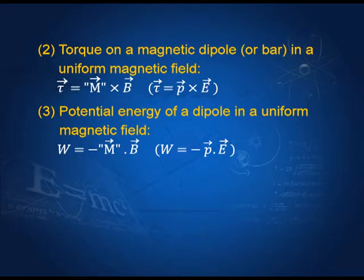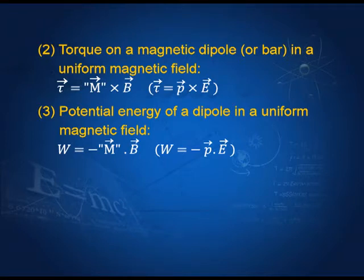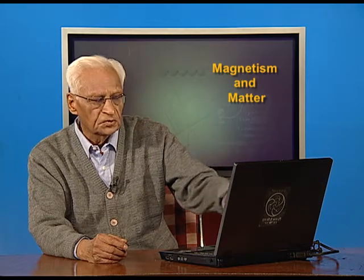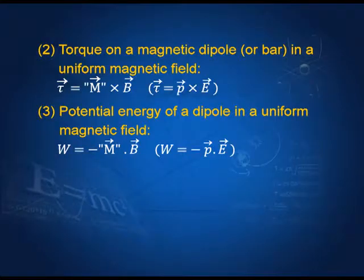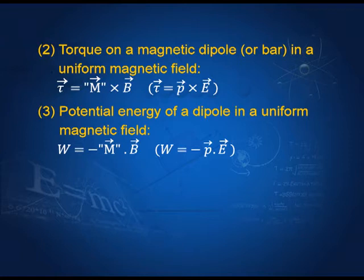The torque on a magnetic dipole, as we saw in the last lecture, is m × B, and the parallel for an electric dipole in an electric field is p × E. The potential energy of a dipole in a uniform magnetic field is −m·B — it must be a dot product since energy is a scalar, not a vector. The corresponding electric case is −p·E.